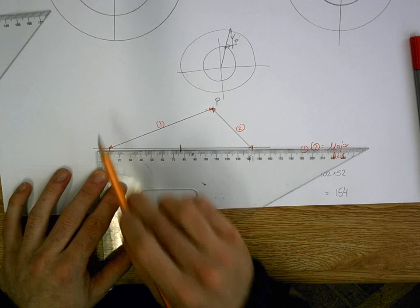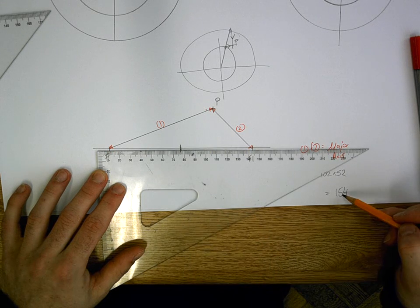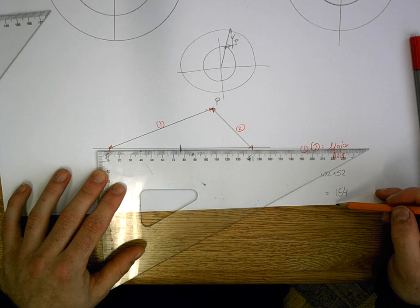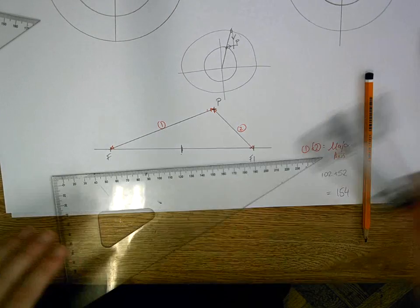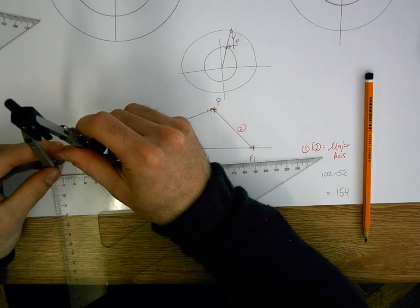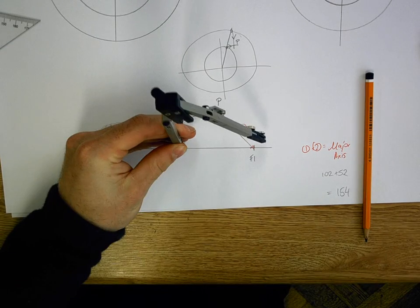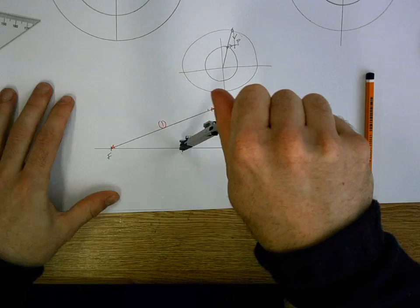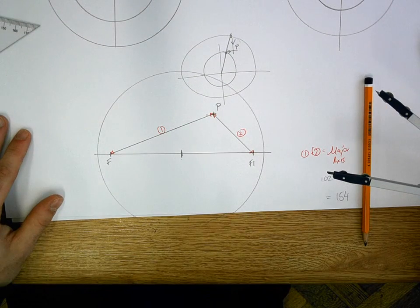Now if I want to draw a major circle, I take half of that. So half of 154 is 77. So I set my compass to 77. Draw in my major circle.